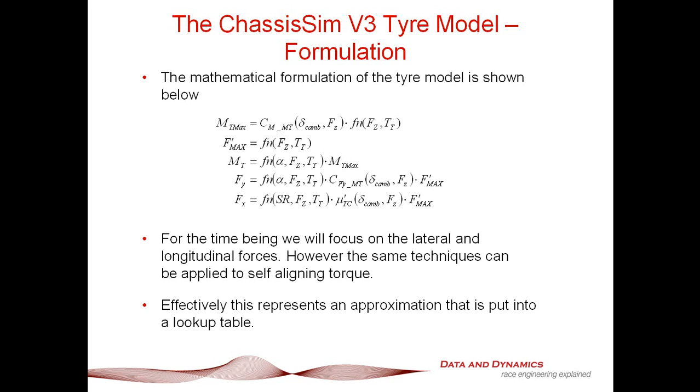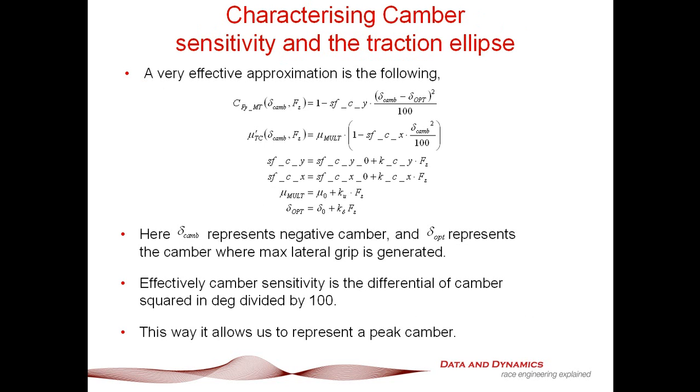What are those multiplication functions for camber and load for the lateral force and the longitudinal force? In more detail, they look like this. What we've got is that the multiplication function for lateral force is effectively 1 minus scale factor CFY times delta camber minus delta optimum squared divided by 100. And for the traction circle radius, for the longitudinal force multiplier, we've got our mu multiplication, 1 minus SFCX times delta camber squared on 100.